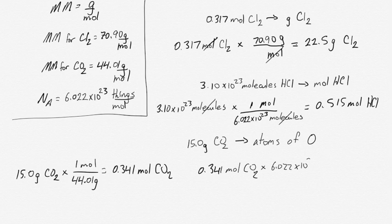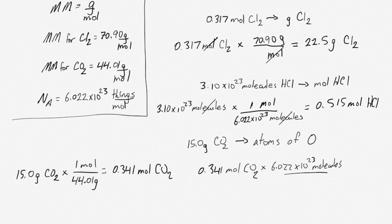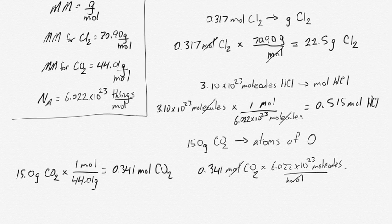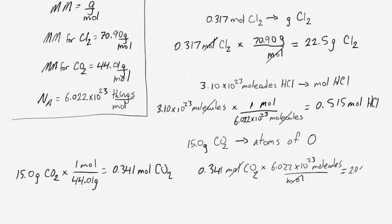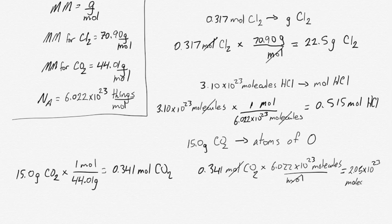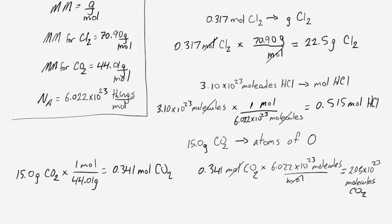In 0.341 moles of CO2 you have a certain number of molecules. You have 6.022 times 10 to the 23 molecules per mole. The moles cancel and you're left with 2.05 times 10 to the 23 molecules of CO2.